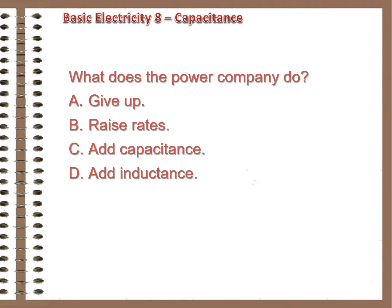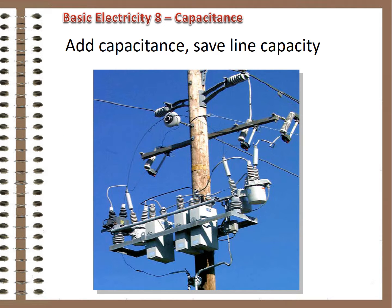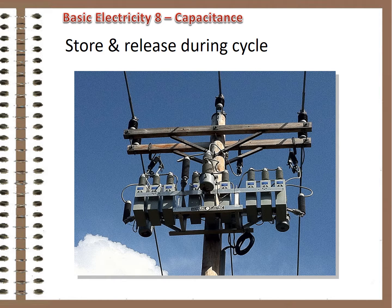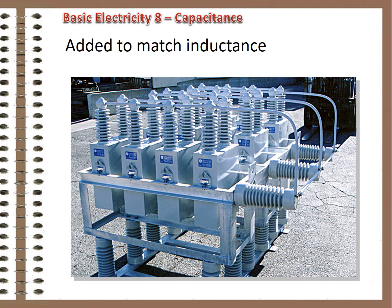The solution: if capacitance is added to the circuit near the source of inductance, the effect is cancelled locally and reactive power doesn't have to be transmitted through the lines, saving the capacity for watts. Each capacitor acts like a temporary battery, storing charge in part of the cycle and releasing it in another, causing a delay in the change of voltage. If planned and sized correctly, the delay in voltage change will match the delay in current change caused by local inductance, and the circuit will have a minimum of reactive power flow.